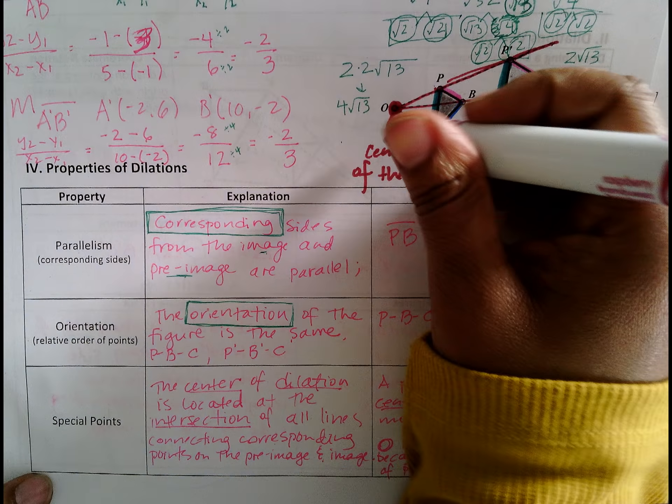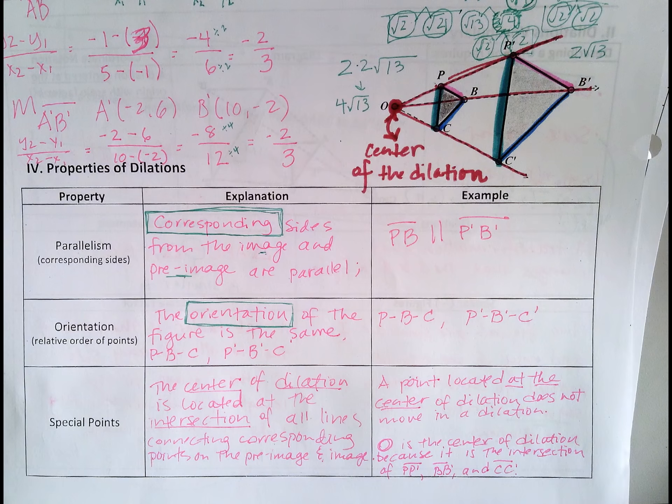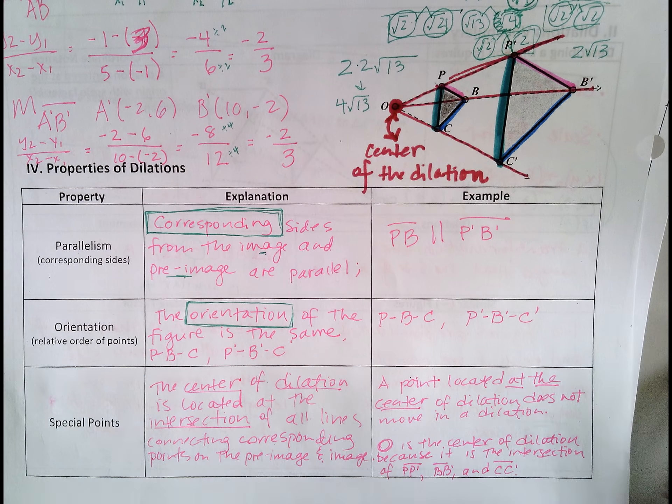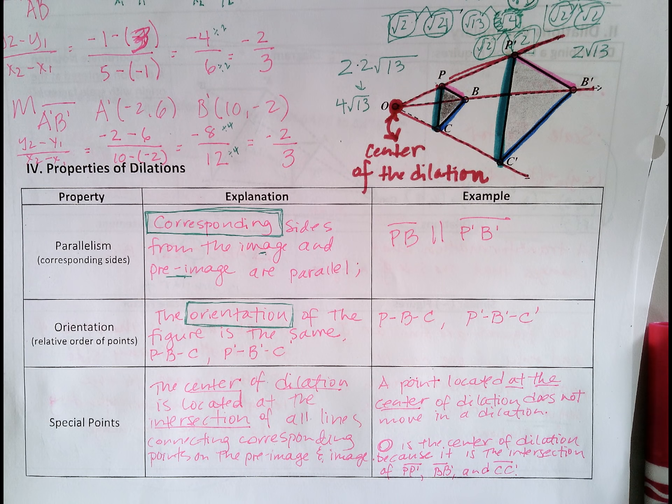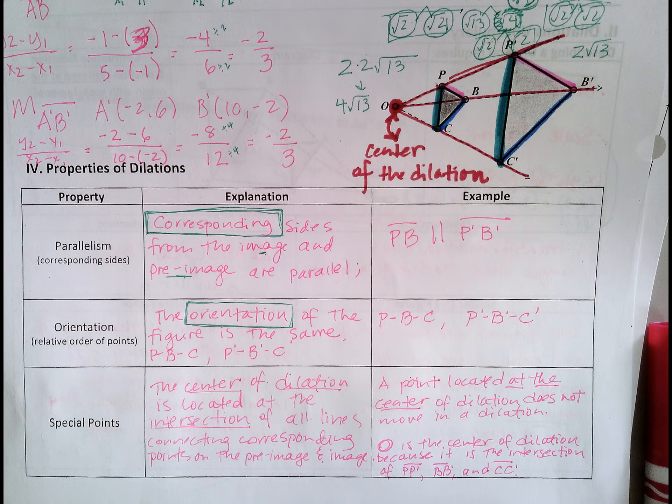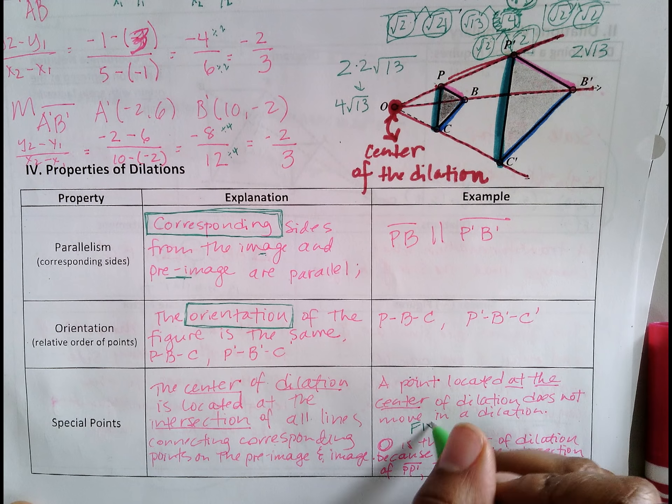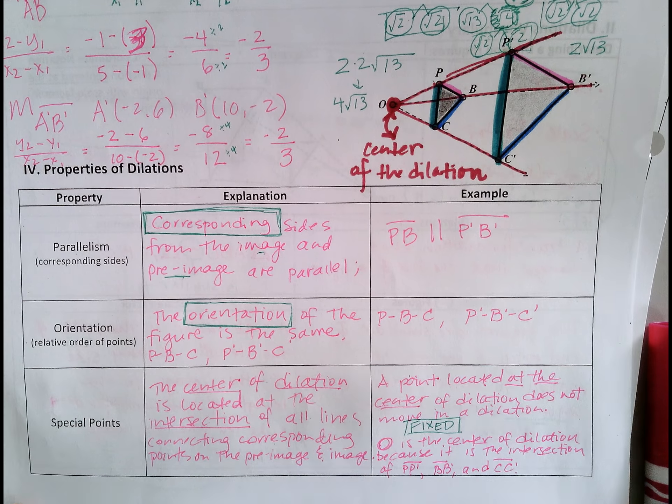So this point here is the center of the dilation, the point where all of those lines that connect corresponding points meet. So a point located at the center of dilation does not move. So it is a fixed point. It's fixed. That's what fixed means in geometry. It's fixed, does not move.